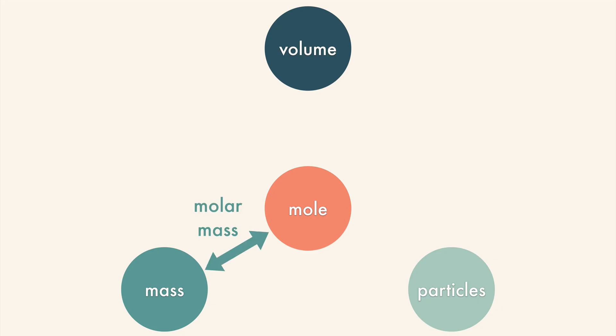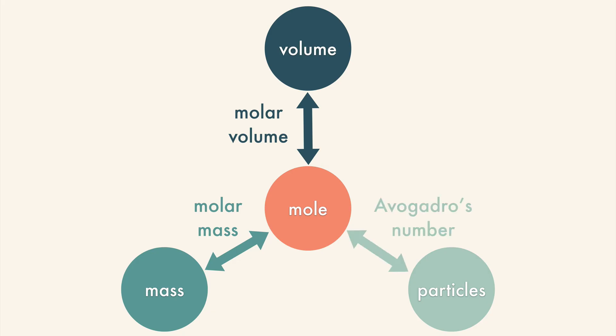To convert between volume and moles, you need to know the molar volume, which is 22.4 liters per mole at STP. And to convert between particles and moles, you need to know Avogadro's number — 6.02 × 10²³ — and that's the number of particles per mole.